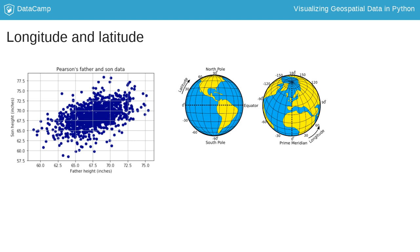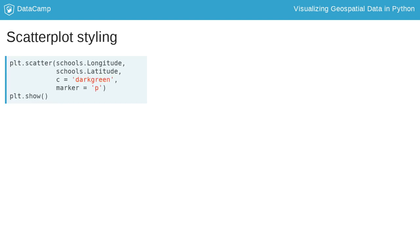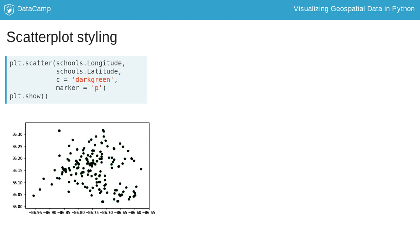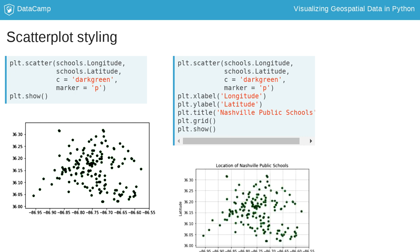Longitude are the lines that run north to south and latitude are the lines that run east to west. We use negative values for latitude south of the equator and for longitude west of the Greenwich Meridian. Style elements like color and marker type help make your plot visually appealing. Axis labels and titles add information, while gridlines give a more precise idea of where things are. Longitude is always plotted along the horizontal axis, while latitude is plotted along the vertical axis.